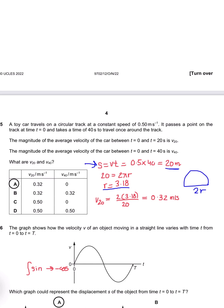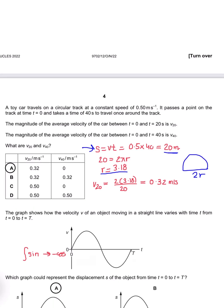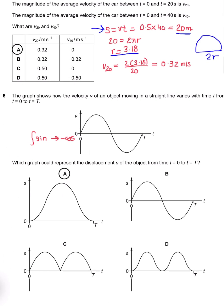Question number 6 says a velocity-time graph is given. What's the displacement-time graph? It's a sine curve, so integration of sine is minus cos. So A seems to be the appropriate answer.